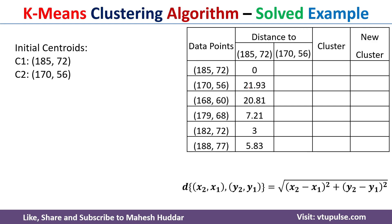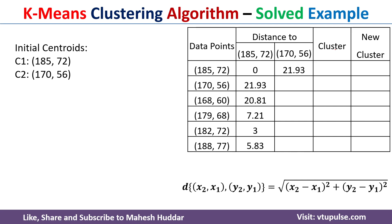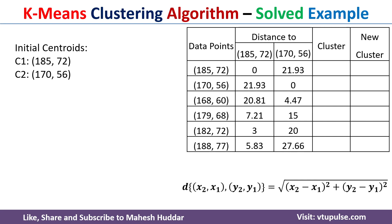Now we will calculate the distance from each data point to the second centroid, which is (170, 56). The first data point is (185, 72). Using the Euclidean formula, the distance from the first data point to the second centroid is square root of (170 - 185)² + (56 - 72)², which is equivalent to 21.93. Similarly, we calculate the distances from the remaining data points to the second centroid.